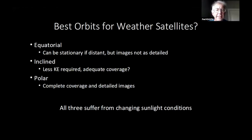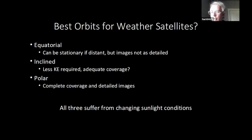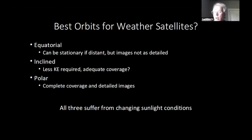One issue with weather satellites is choosing the right orbit. An equatorial orbit means the satellite stays above one location — easy to point an antenna, but you're far away and images aren't as detailed. You're also stuck seeing primarily the equatorial region at best detail. As you approach the poles, your ability to resolve goes down — partly because the ground is tilting away from the satellite, so you're seeing things edge-on rather than face-on. It's very difficult to get good images of the polar regions from an equatorial satellite.